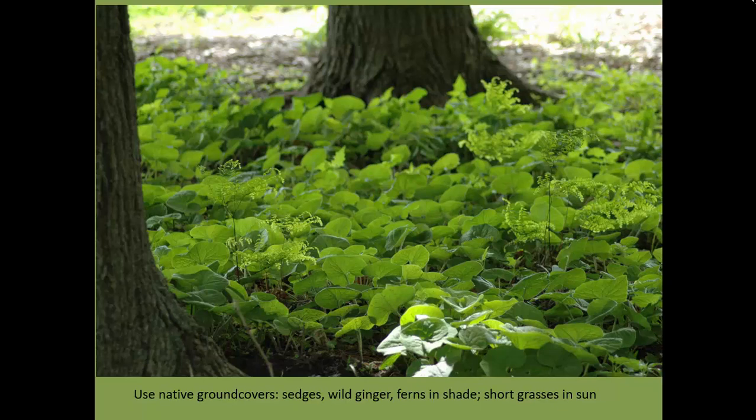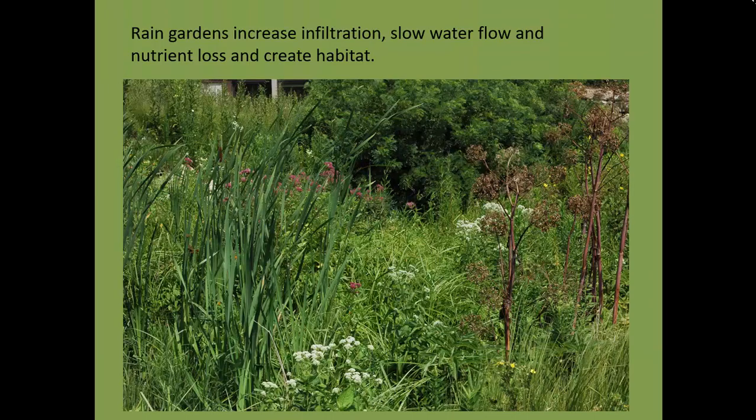For ground covers — people like to have something covering the ground instead of weeds — we can use native plants instead of common ornamental ones. Examples of ornamental ground covers are bishop's weed and squill, a little spring flower that is very common. Those plants can be substituted with natives such as wild ginger, ferns, small sedges of many different species. If you have a drier site with a little more sun, you can use Canada mayflower, which spreads as a ground cover as well.